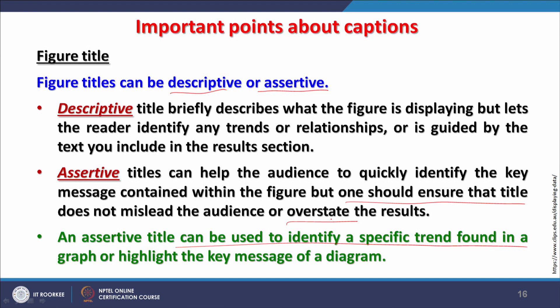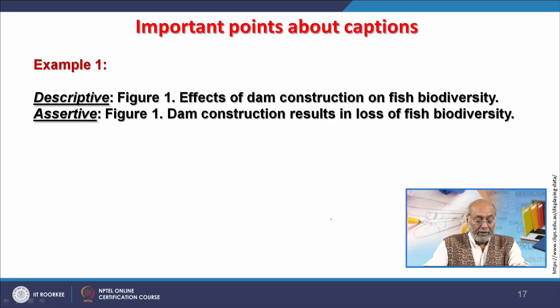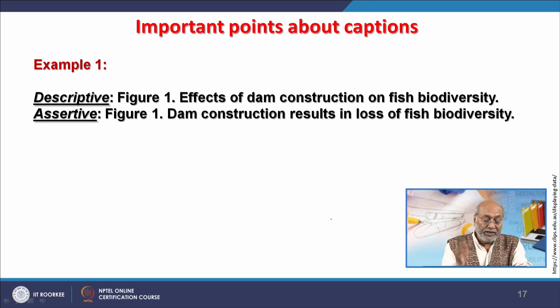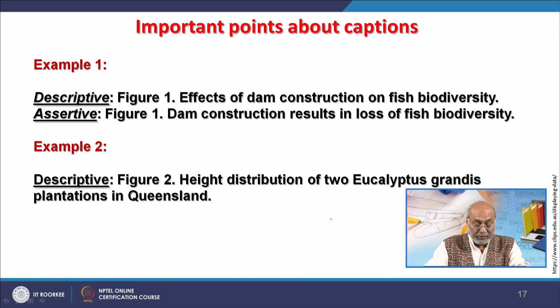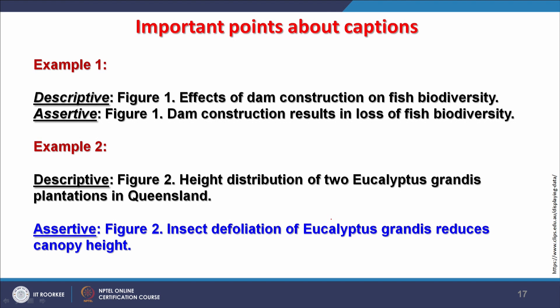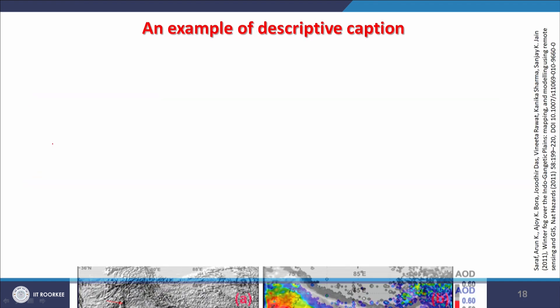Assertive titles can identify specific trends in a graph or highlight the key message of a diagram. However, if a title claims a correlation exists but the reader finds none, that overstates the results and is not good — the audience may stop reading. For example, a descriptive title would be 'The effect of dam construction on fish biodiversity,' while an assertive title would be 'Dam construction results in loss of fish biodiversity.' Slight changes in wording make a significant difference.